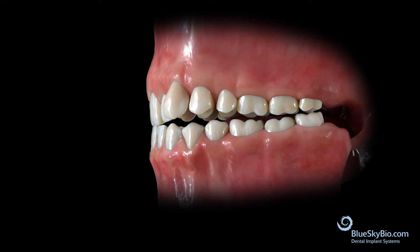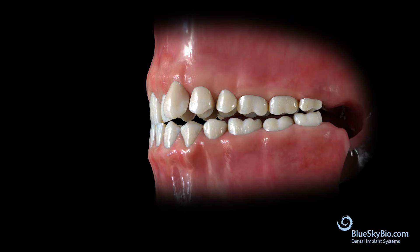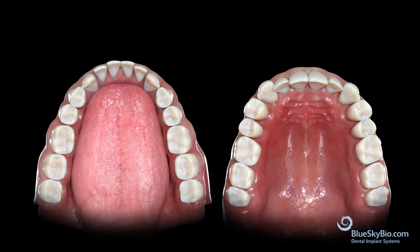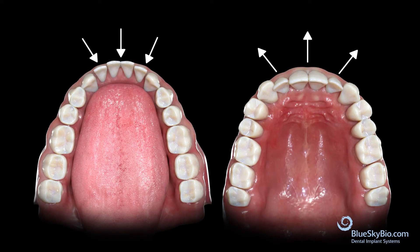If you notice that the patient's incisors contact end-to-end, the patient may in fact be actively protruding his mandible to slide past this interference. This allows his posterior teeth to come into occlusion. By bringing these upper anterior teeth forward into ideal alignment and retracting the splayed lower anterior teeth, you may be able to unlock this patient's natural bite.